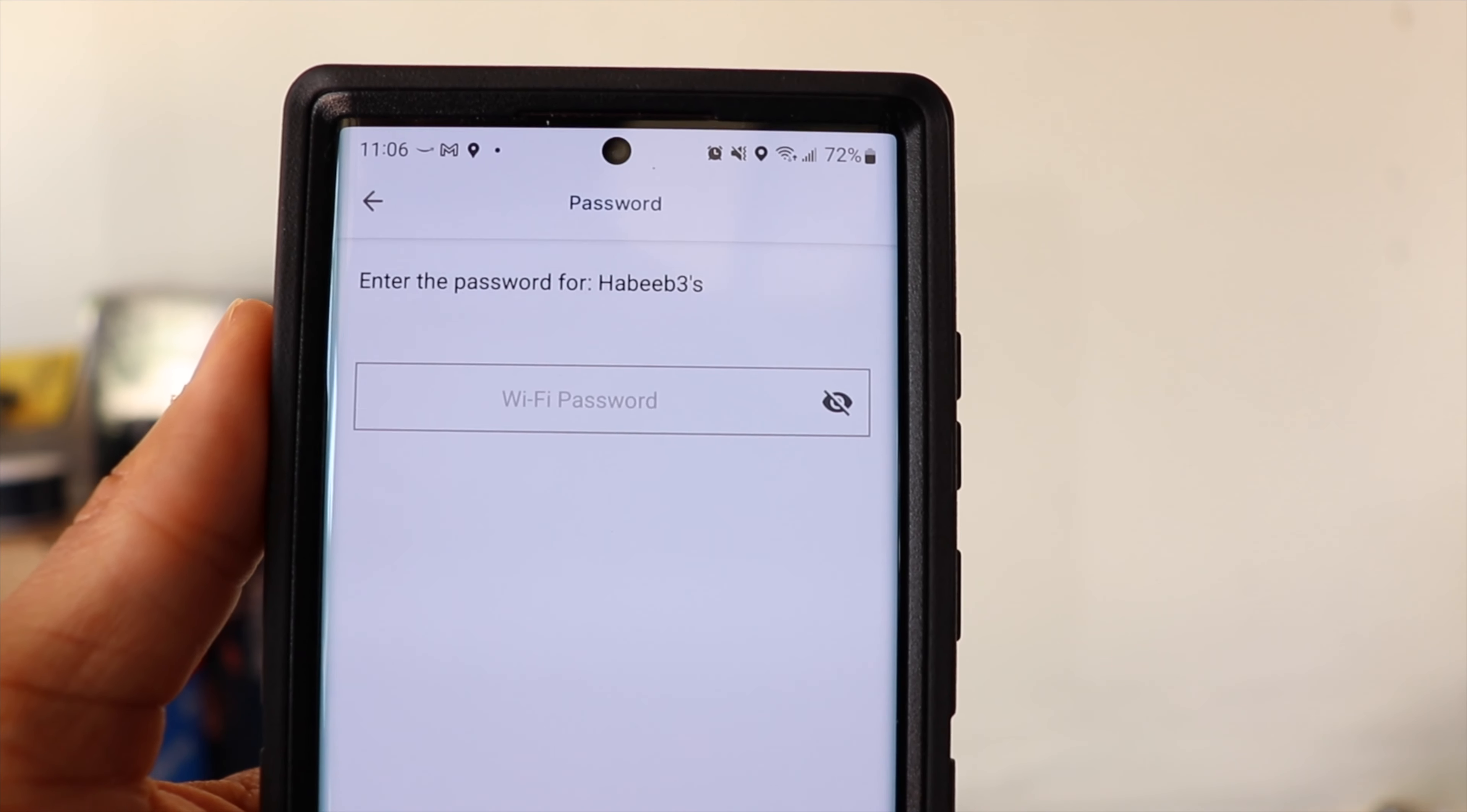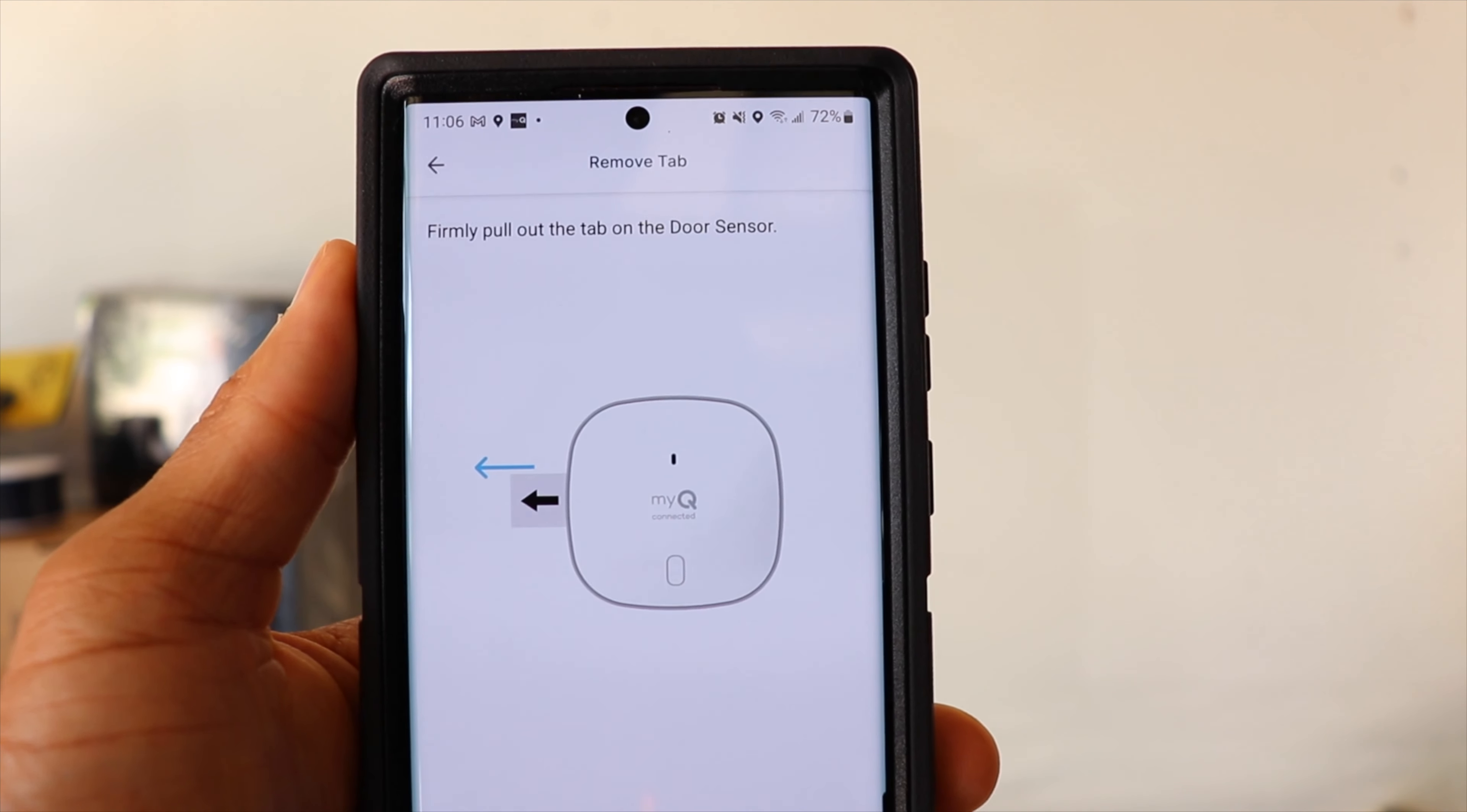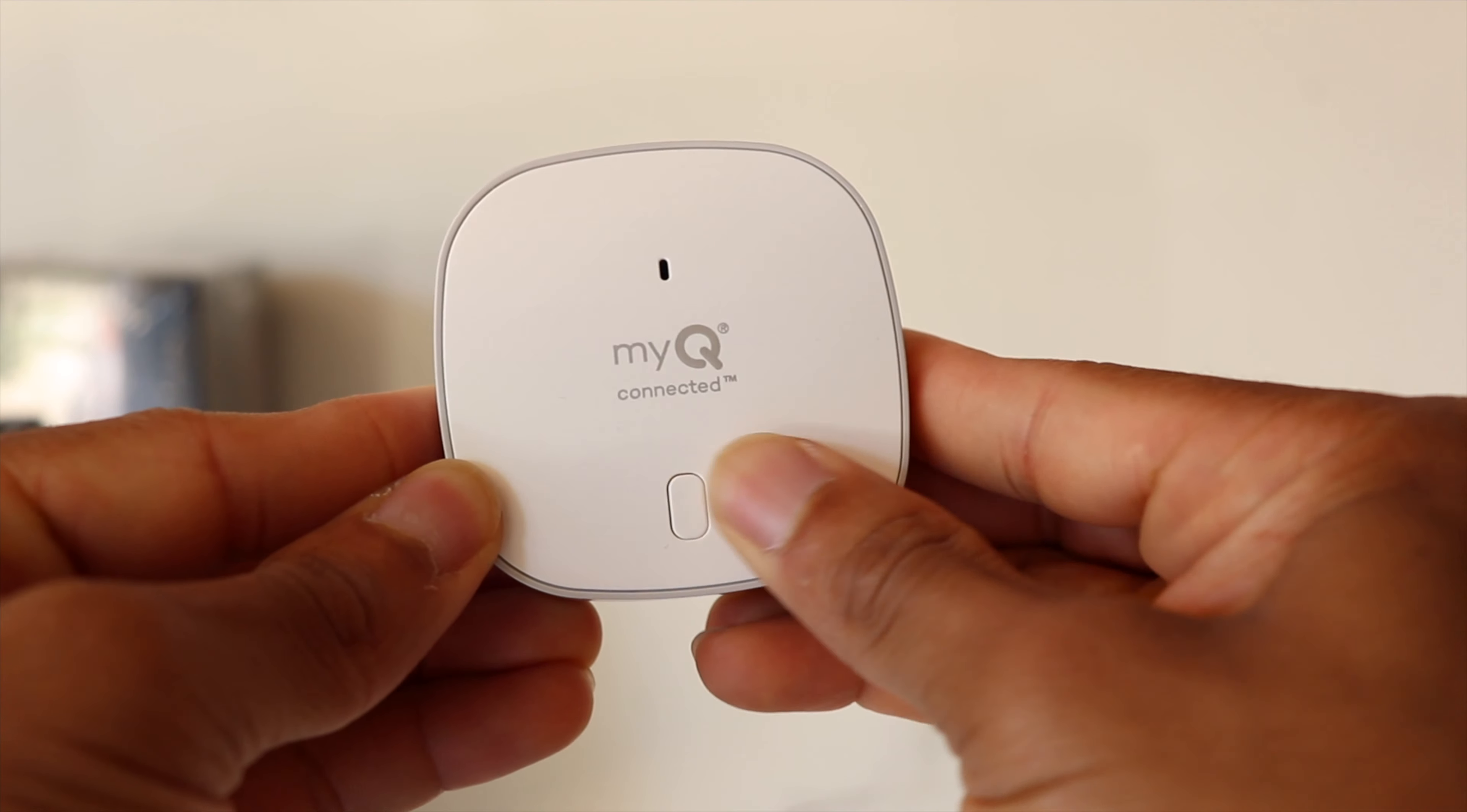After the device connects to your Wi-Fi, you want to go ahead and grab the door sensor and remove the plastic tab, which is going to activate the battery. After that, we're going to press the button on the front of the door sensor. And when you do that, you should see a red light.